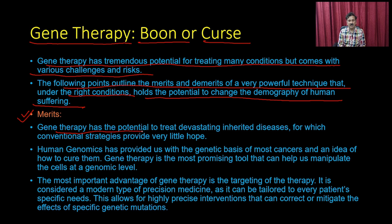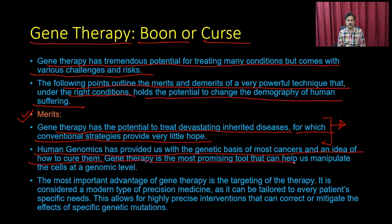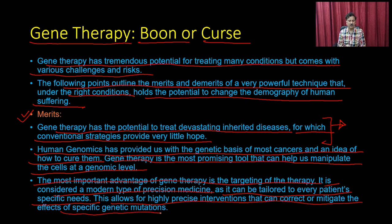The merits: Gene therapy has the potential to treat devastating inherited diseases for which conventional strategies provide very little hope. Where inhibitors and enhancers cannot help, when there are mutations with no other cure, gene therapy is valuable. Human genomics has provided the genetic basis of most cancers and ideas on how to cure them. Gene therapy is the most promising tool to manipulate cells at the genomic level. It is also a form of precision medicine, tailored to every patient's specific needs, allowing highly precise interventions to correct or mitigate specific genetic mutations.